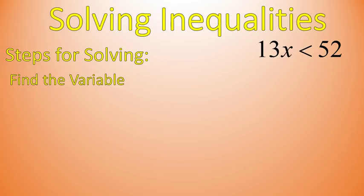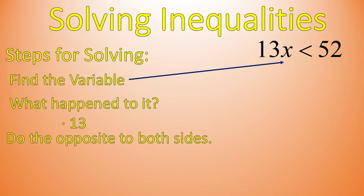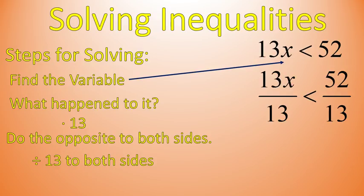Step number one: find our variable. Whenever you're looking at an inequality and you're trying to solve it, find the variable. In this case, it's x. We ask ourselves what happened to it, or what is connected to that x. In this case, it was multiplied times 13 — that's what 13x means. So we're going to do the opposite, which is the inverse operation, to both sides of this inequality. We're going to divide by 13. So that's what this would look like: 13x divided by 13.